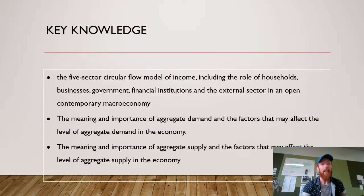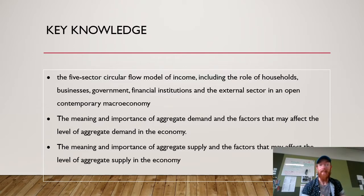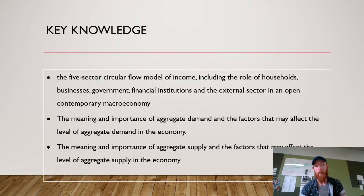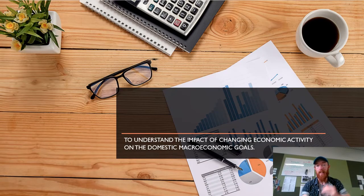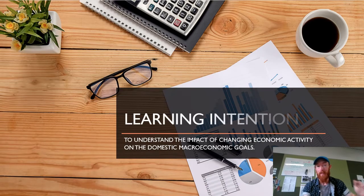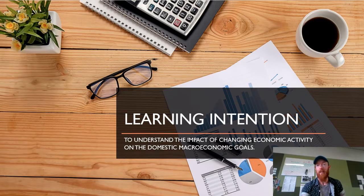Our key knowledge today is quite large. We're looking at the five-sector circular flow model of income, including the role of households, businesses, government, financial institutions, and the external sector in an open contemporary macroeconomy. Then we're going to look at the meaning and importance of aggregate demand and the factors that may affect aggregate demand, as well as the same for aggregate supply. Our intention is to understand the impact of changing economic activity on the domestic macroeconomic goals.